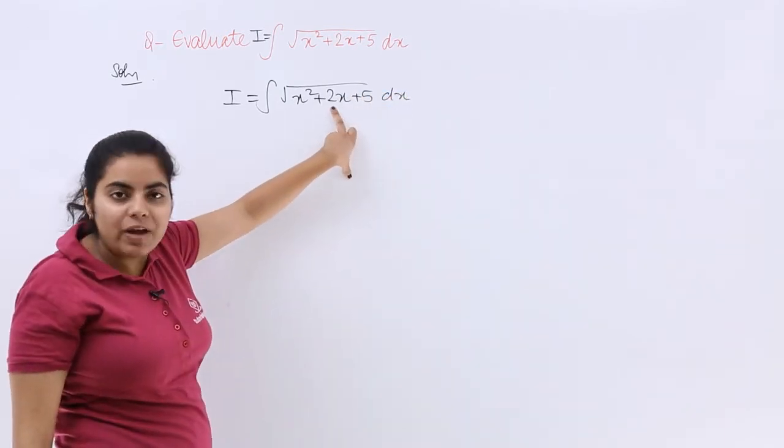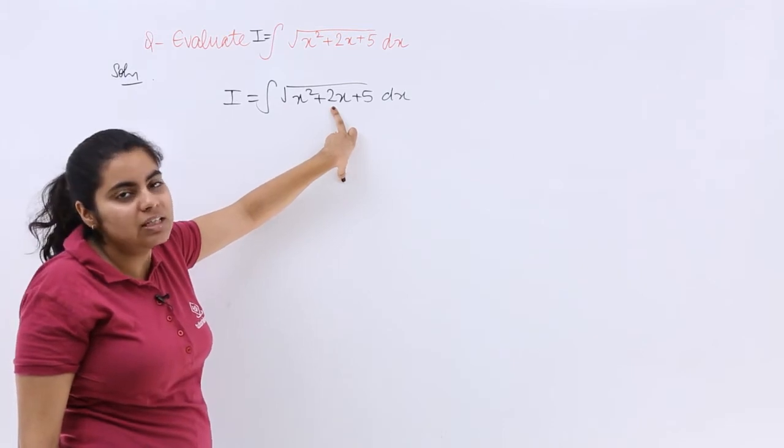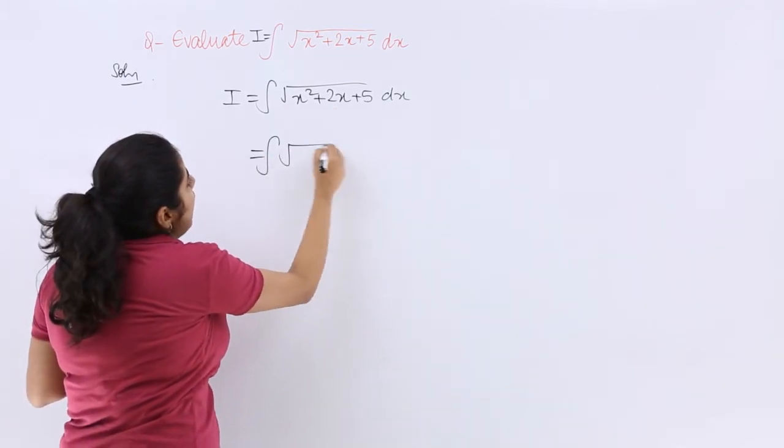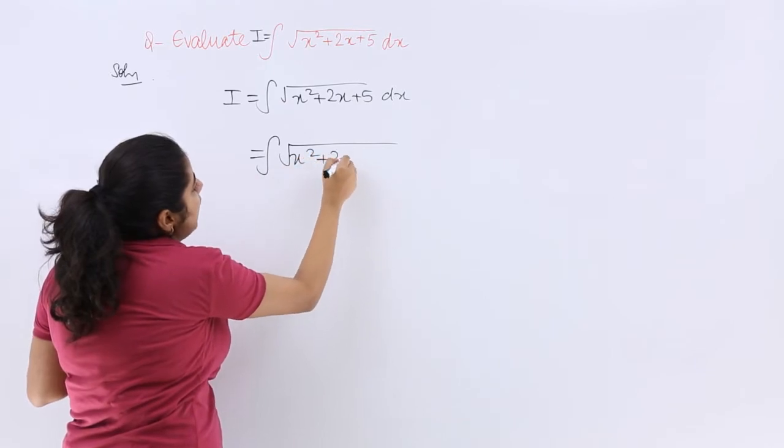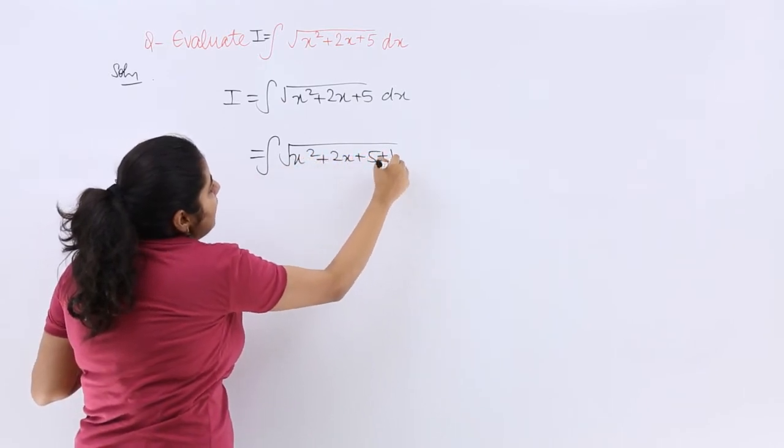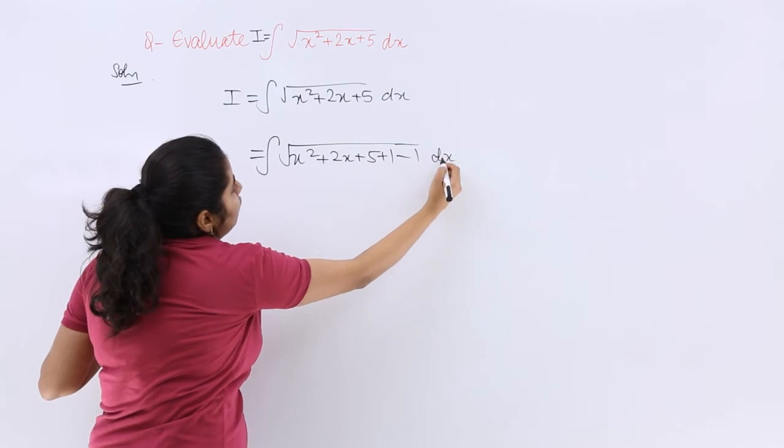Now, the coefficient of x is 2, half of it is 1, and its square is also 1. So I will use completion of square to add and subtract the half of the coefficient.